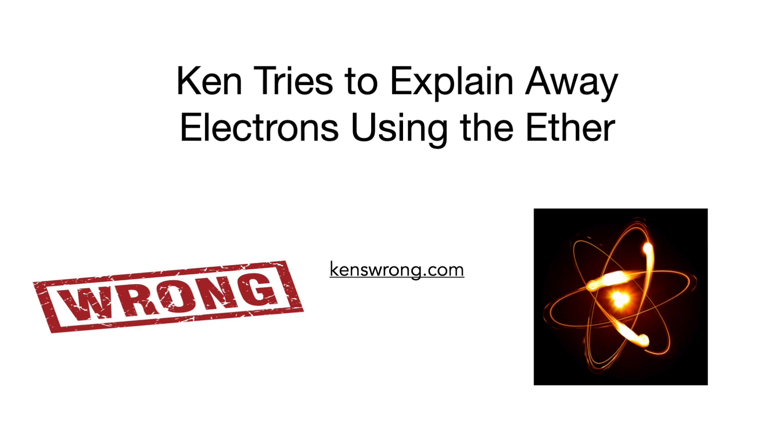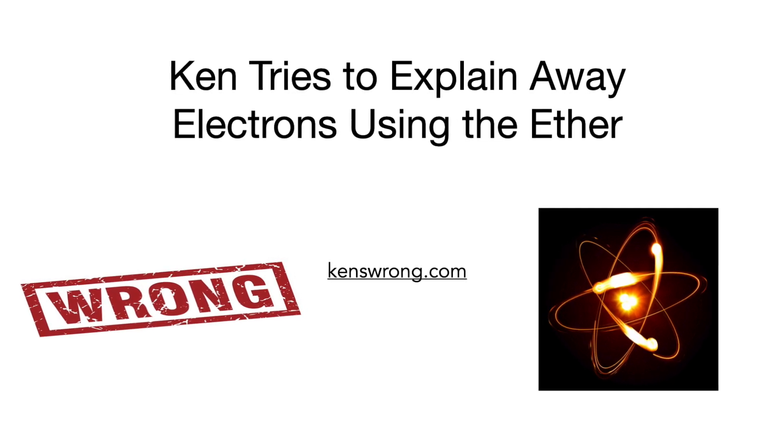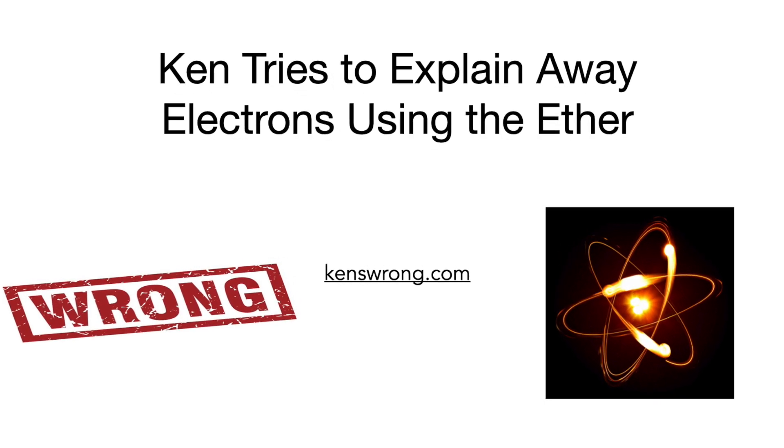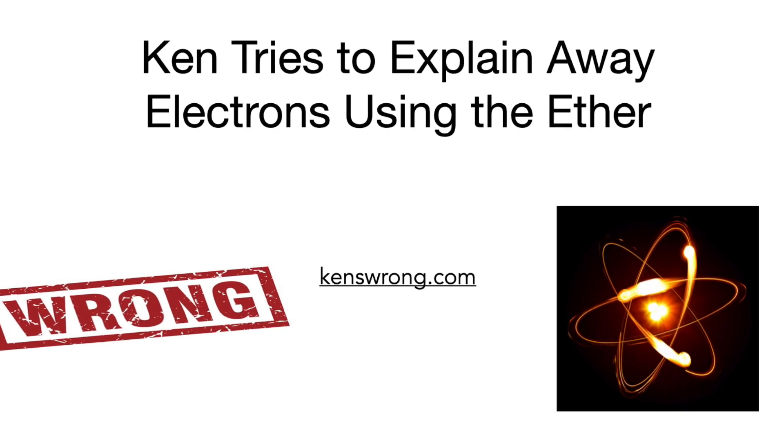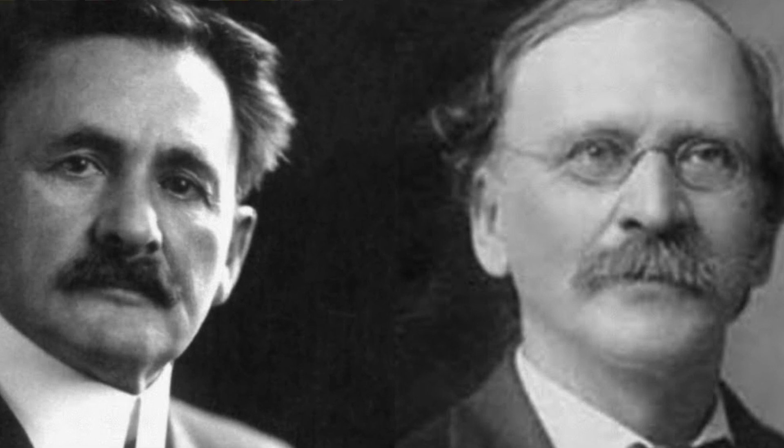The angry photographer insists that electrons don't exist. Instead, he claims they're ether perturbation modalities. As we explained in more detail under Field Theory Why Ken's Wrong, Mickelson and Morley found that the ether doesn't exist in 1887.